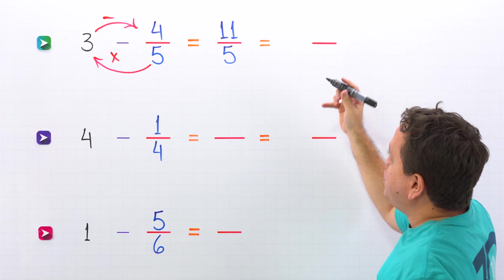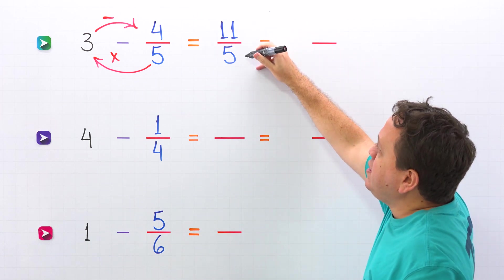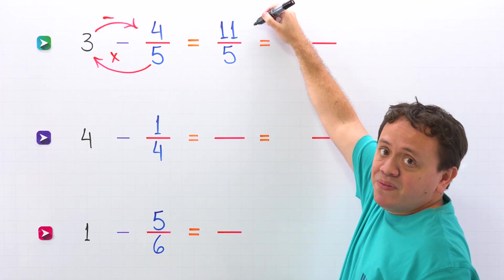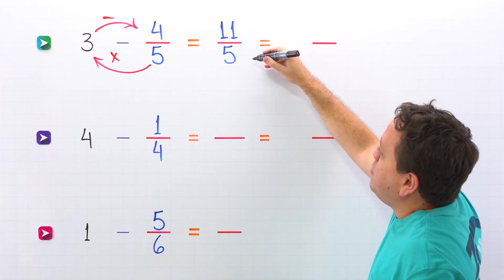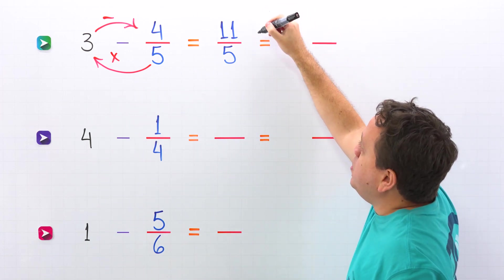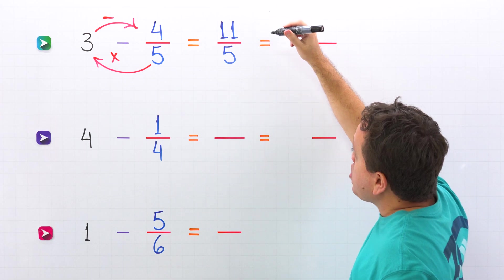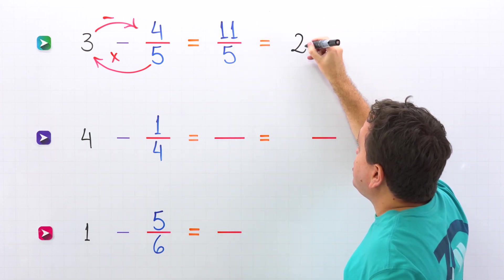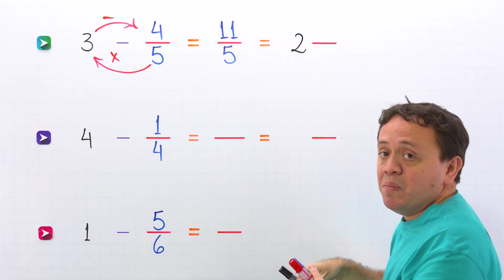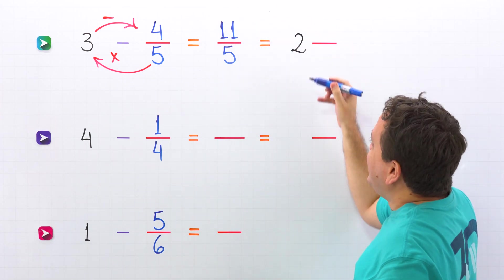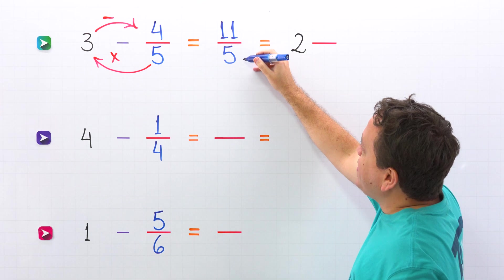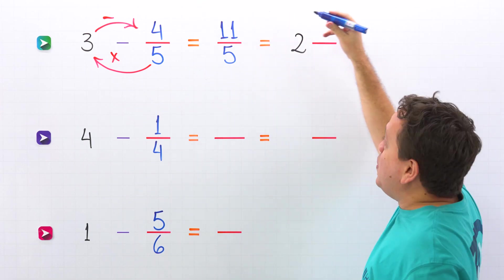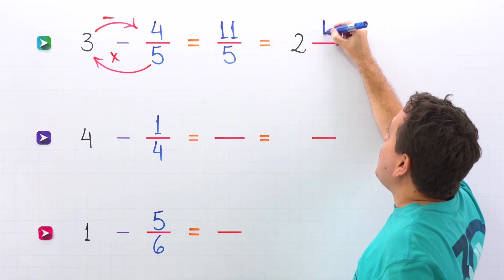Are you ready for this conversion? How many times does 5 go into 11? Well, 5 goes into 11 two times. And then we multiply: 2 times 5 is 10. To get 11, we need to add 1.